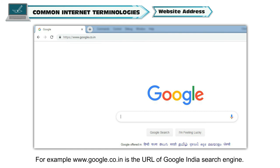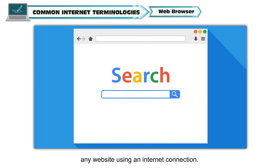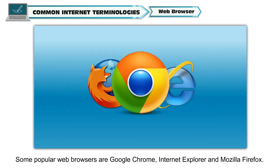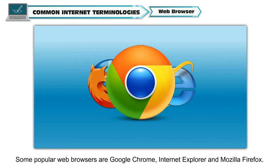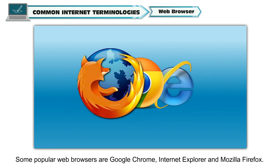For example, www.google.com is the URL of Google India's search engine. Web browsers are application software used to browse any website using an internet connection. Some popular web browsers are Google Chrome, Internet Explorer and Mozilla Firefox.